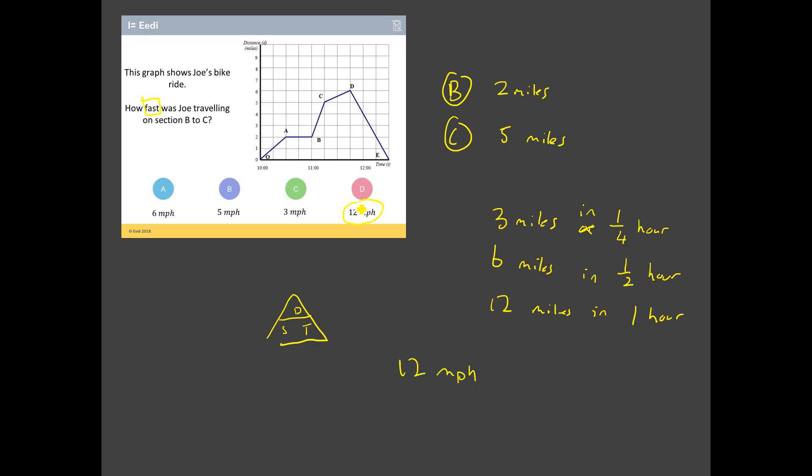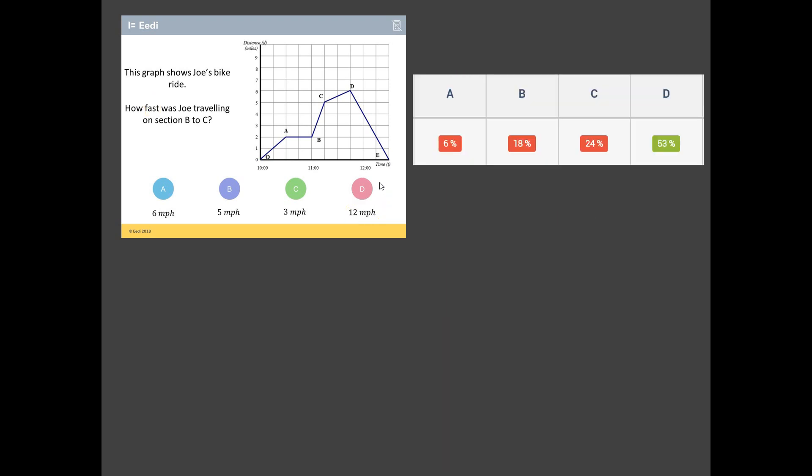So, I think that Joe is travelling at 12 miles per hour. I think the correct answer to that is D. Now, notice to get that, we first had to carefully work out how far Joe had gone and then carefully work out how long it had taken him and scale that up to get that into units that we're happy with, miles per hour. So, I think the correct answer is D. We've got it right. That's good news. But look at that. Only 53% of students agree with us.